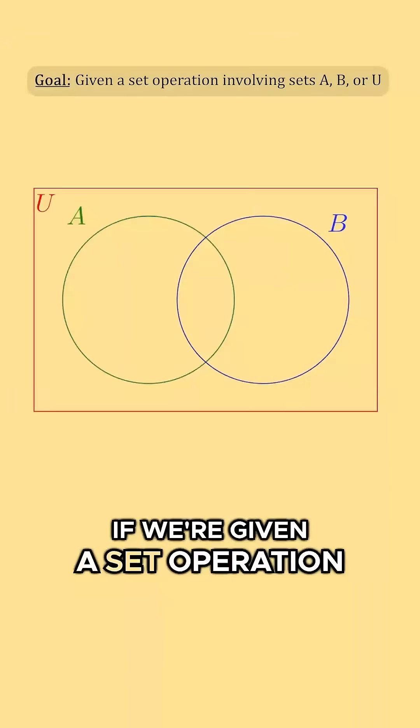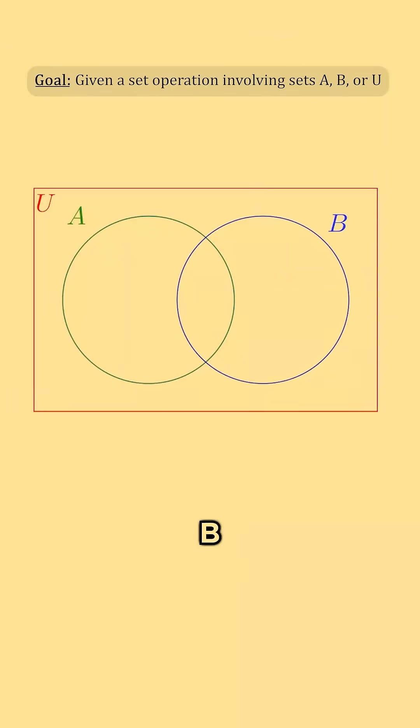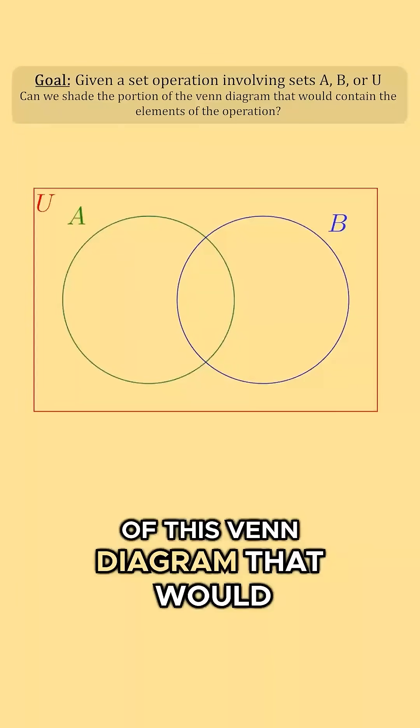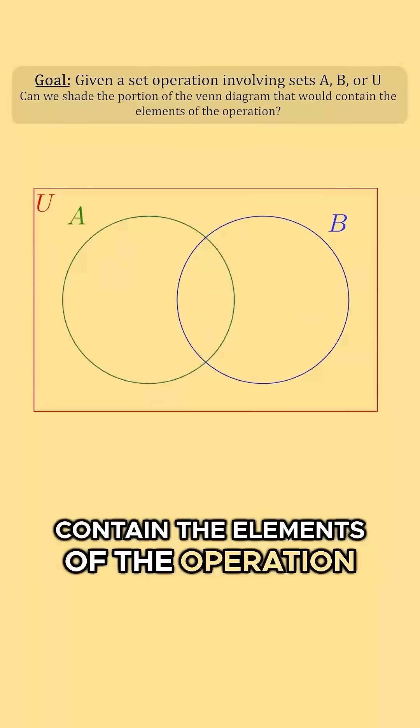Our goal here is that if we're given a set operation containing set A, B, or U, can we shade in the portions of this Venn diagram that would contain the elements of the operation?